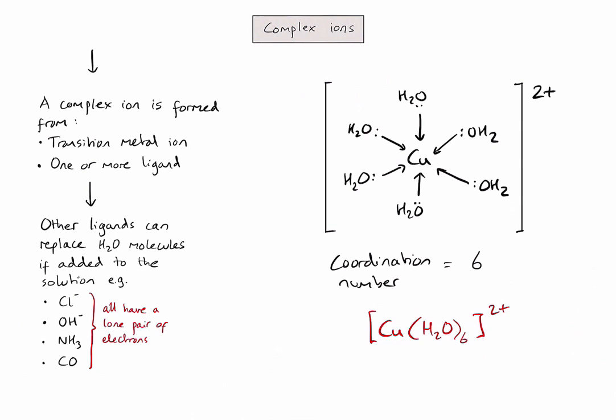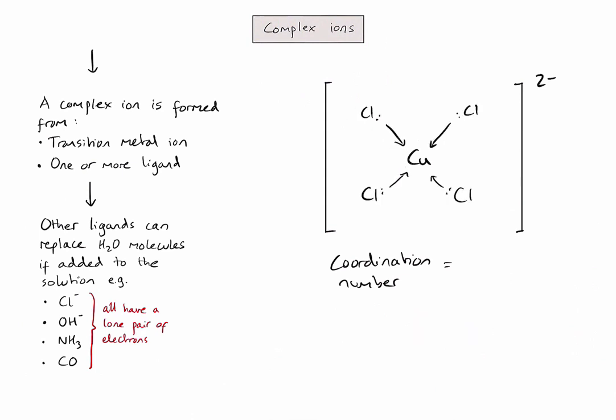So if, for example, I were to replace my water molecules with some chloride ligands, we get a complex ion that might look something like this. You'll notice in this diagram we can only fit four chloride ligands around my copper ion, so the coordination number of this complex ion would be four. And taking into account the charge of the copper ion, which was two plus, and the four chloride ligands, which each had a negative charge, you can see that the overall charge on my complex ion in this case is two negative now. So the chemical formula for this complex ion would look something like this.